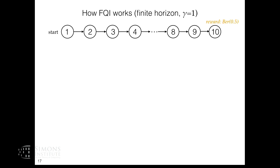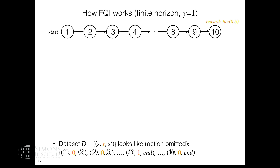What I'll describe now is how, if you only assume realizability, this simple algorithm can go completely wrong in the worst case. First let me show how it works correctly. Consider a simple chain MDP with 10 states. You start from state 1 and there's only one action that moves you forward; at the end you get a Bernoulli reward. Your dataset looks like: start from state 1, get zero reward, transition to state 2, and so on. At the end you get a random reward of 0 or 1 and the process terminates.